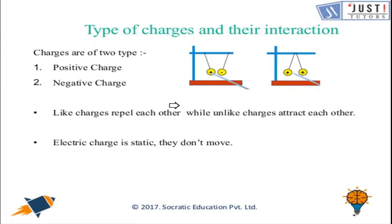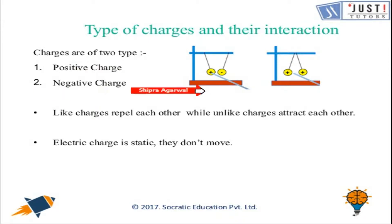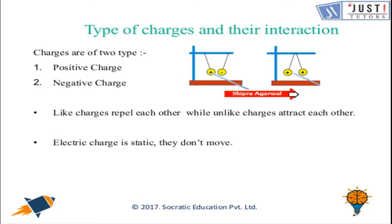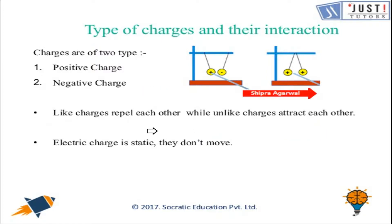There are two types of charges: positive charge and negative charge. When you put one positive and one negative charge together they attract each other, while two positive or two negative charges placed together will repel each other. These are the properties we should remember. When these charges move, they initiate electric current. Electric current in a circuit is nothing but the motion of electric charges.